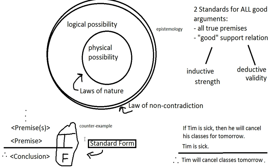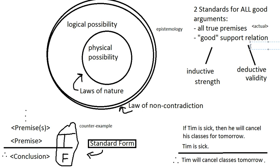When we're testing an argument for validity, we're searching for these counterexamples. Keep in mind: we're looking for a possibility, not something that is actually the case. When evaluating whether the premises are all true, we do care about what is actual. But when it comes to the support relation — both inductive strength and deductive validity — we're not concerned with what's actual, only with what's possible.